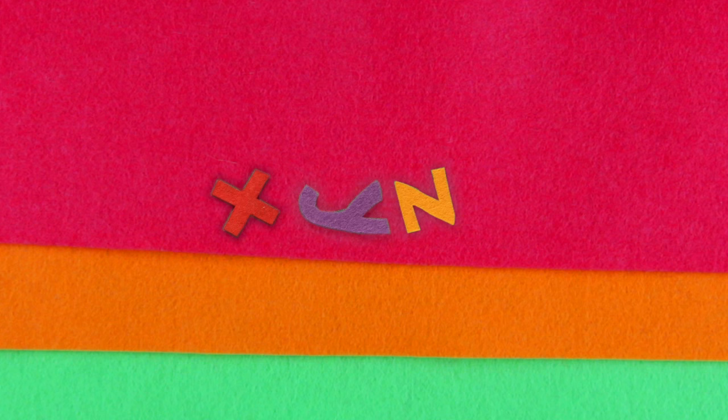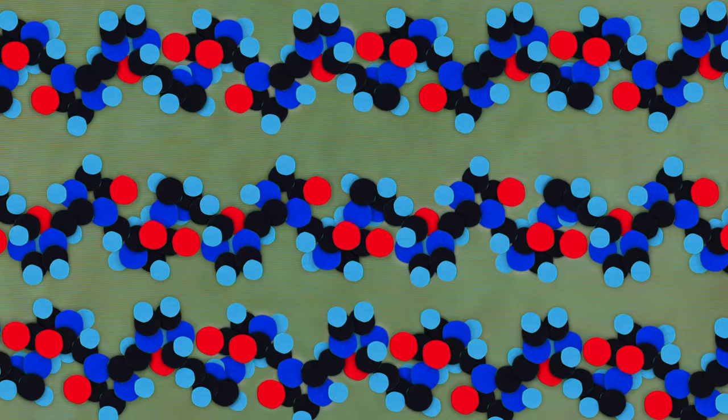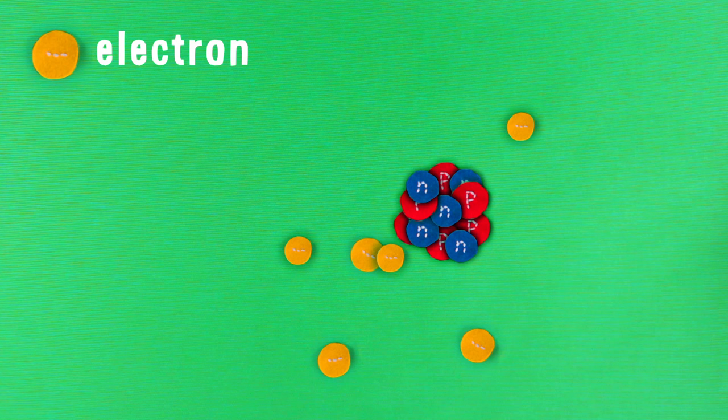But first, you have some zooming in to do. For starters, you'll find that all materials consist of atoms, which in turn consist of smaller particles: electrons that circle the atomic nucleus, which is made up of protons and neutrons, and these in turn consist of quarks and gluons.